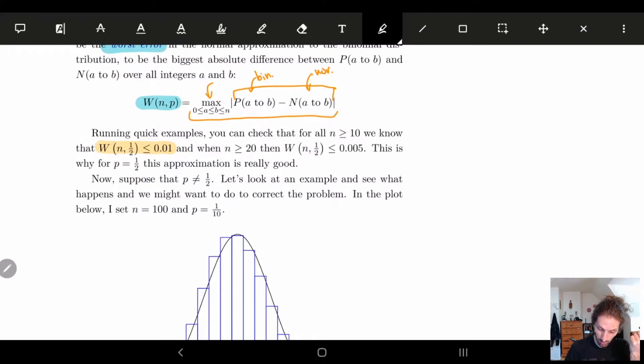And then for n is equal to 20 or greater, we're already down to half a percent. So for p equal to one-half, this is an amazing approximation, the normal approximation. It's phenomenal.